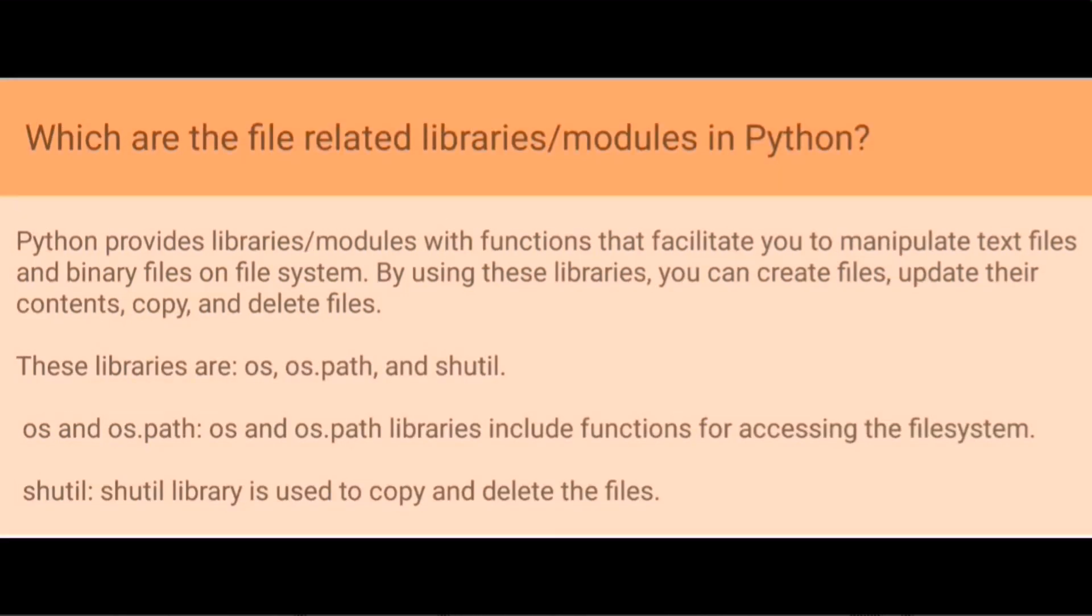What are the file related libraries/modules in Python? Python provides libraries/modules with functions that facilitate you to manipulate text files and binary files on file system. By using these libraries you can create files, update their contents, copy and delete files. These libraries are: os, os.path, and shutil. Os and os.path libraries include functions for accessing the file system. Shutil library is used to copy and delete the files.